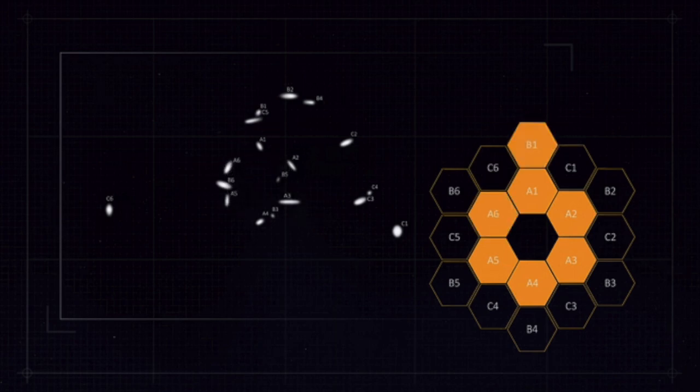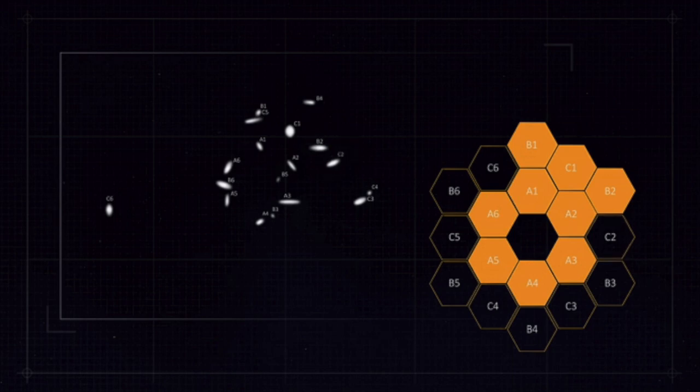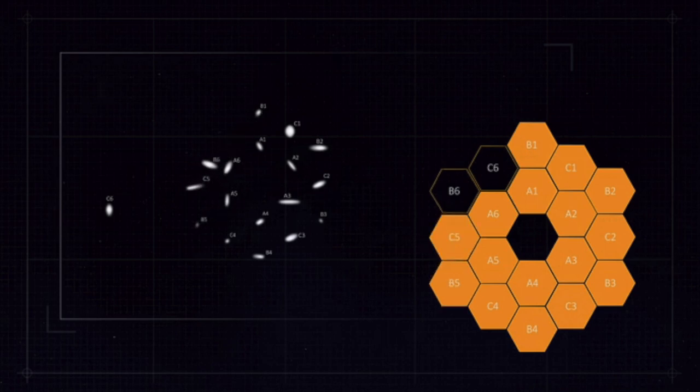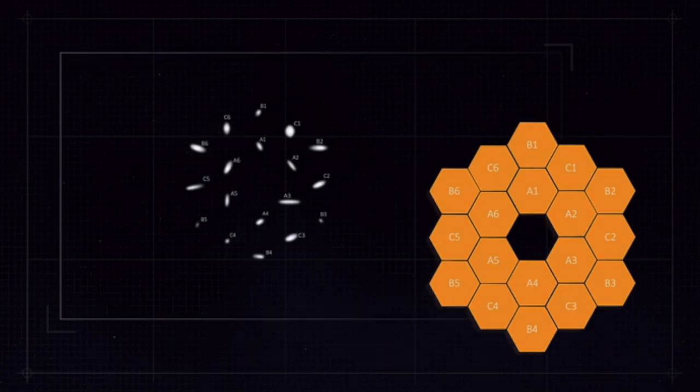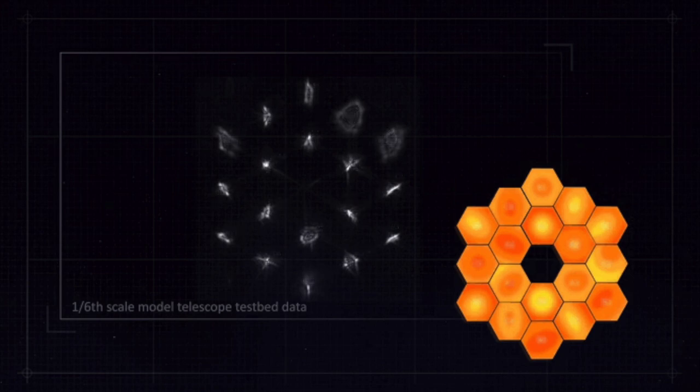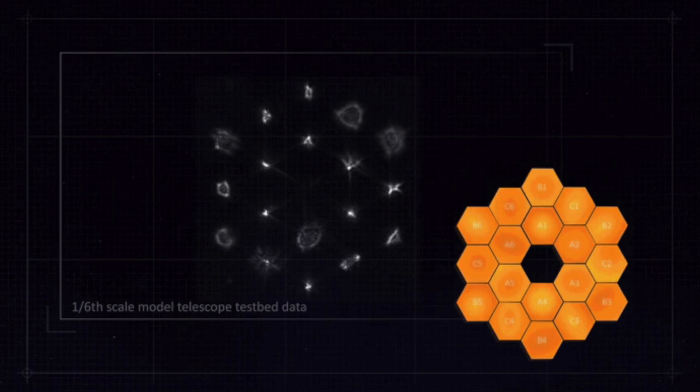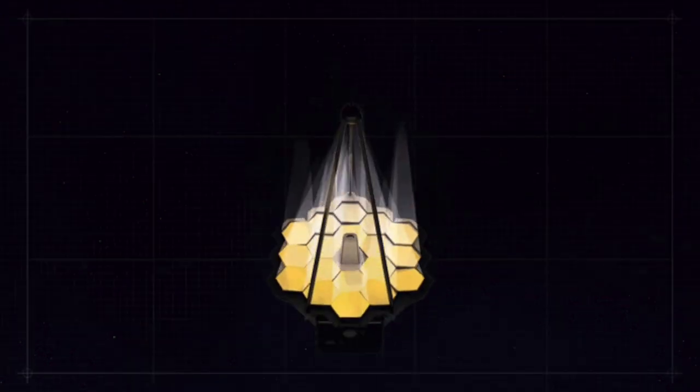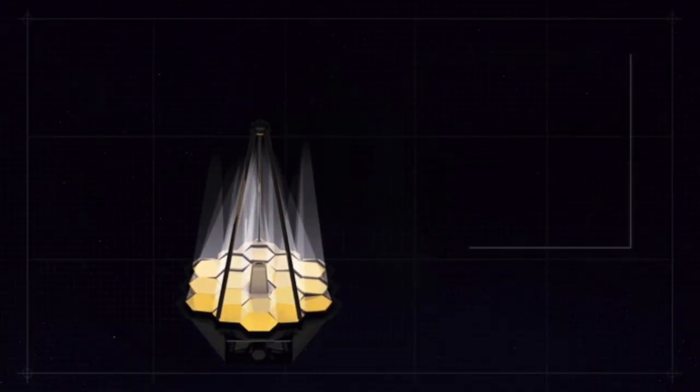The James Webb Space Telescope has four primary goals: search for light from the first stars and galaxies that formed in the universe after the Big Bang, study galaxy formation and evolution, understand star formation and planet formation, and study planetary systems and the origins of life. To achieve these goals effectively, Webb's instruments focus on near-infrared light rather than visible or ultraviolet light like the Hubble telescope. Webb's sensitivity extends from 0.6 to 28 micrometers, covering the range from orange light to deep infrared radiation.